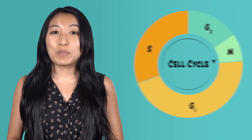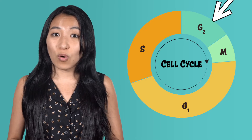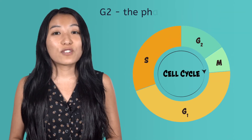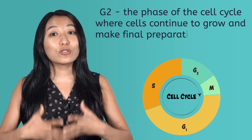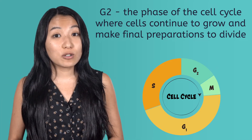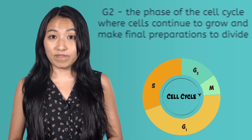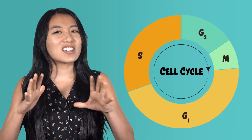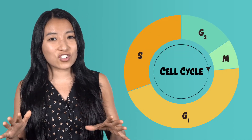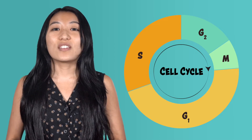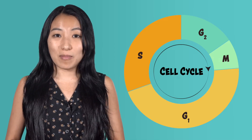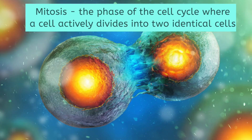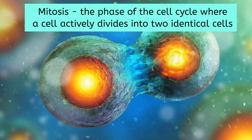From here, we move into G2, or Gap 2, which is the phase of the cell cycle where cells continue to grow and make final preparations to divide. Once the cell has decided that everything is just right for division, the cell enters the final stage, M, or mitosis. Mitosis is the phase of the cell cycle where a cell actively divides into two identical cells.